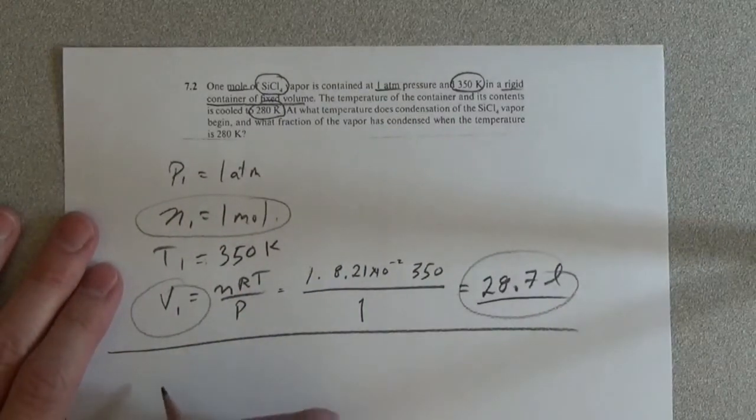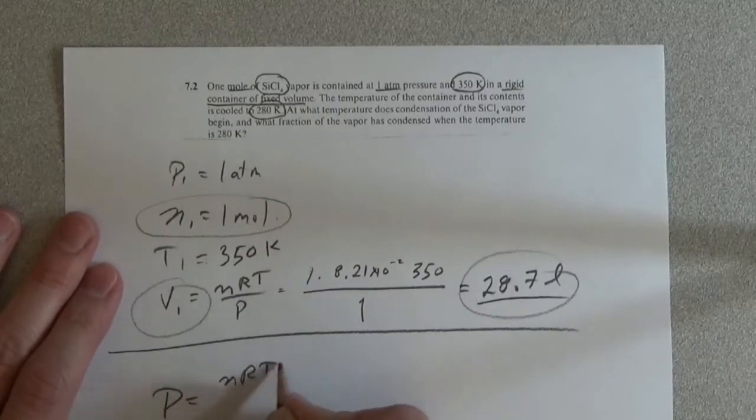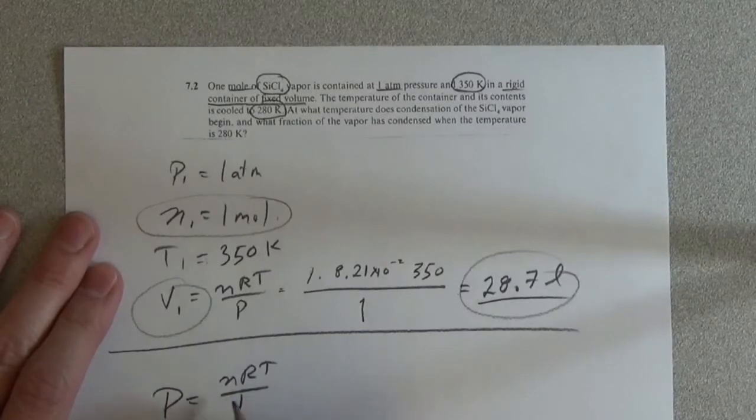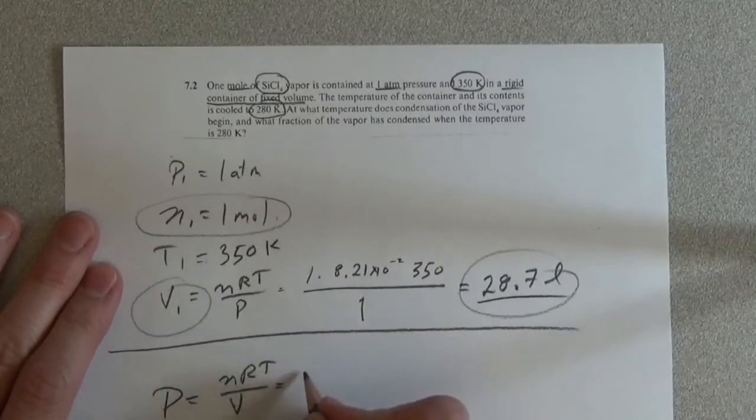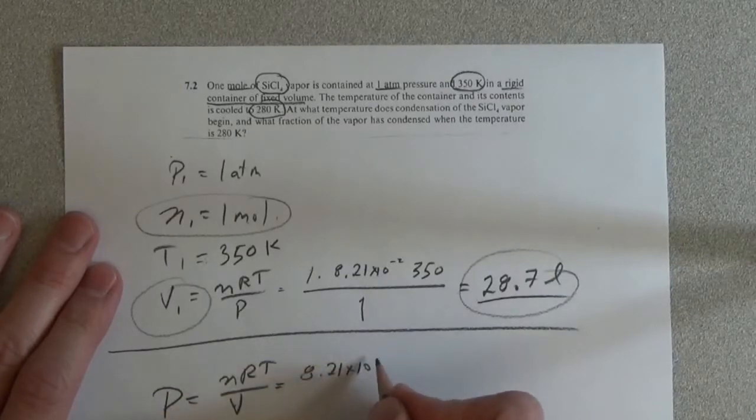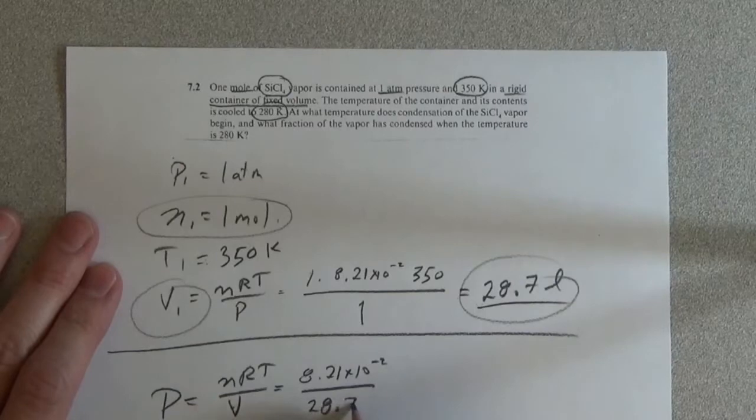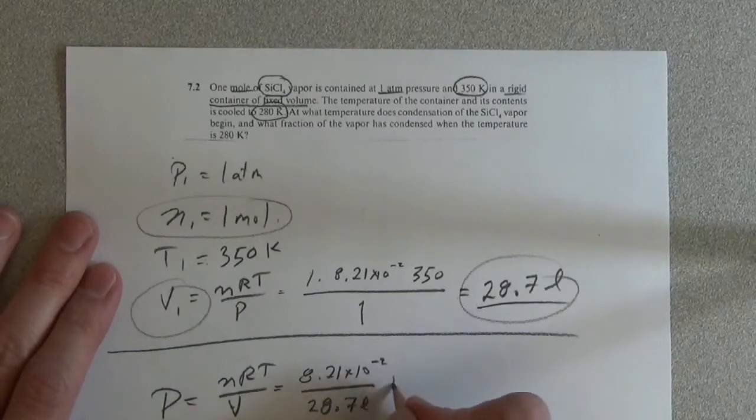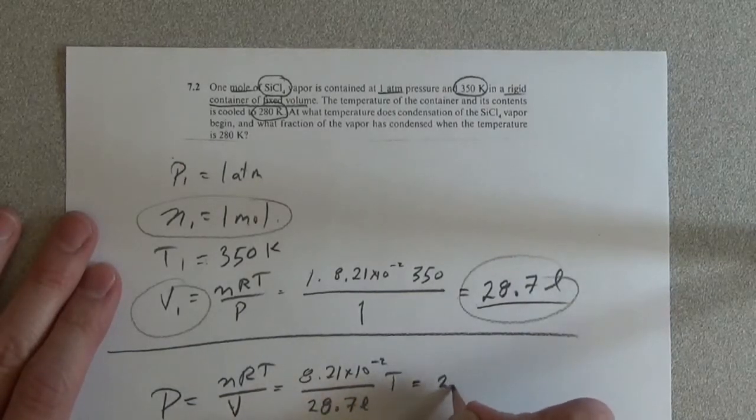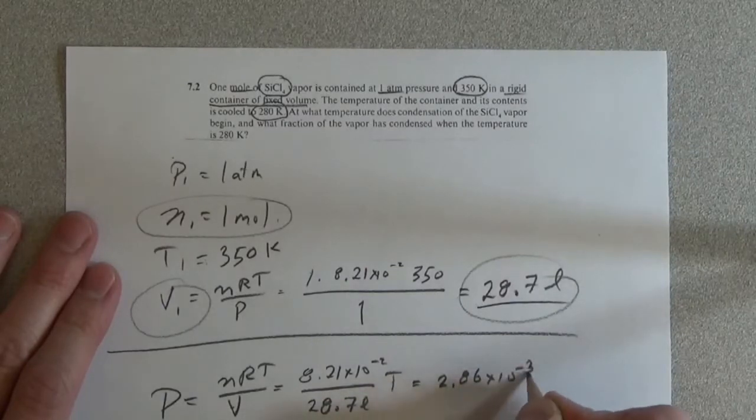So P is equal to NRT over V is equal to 8.21 times 10 to the minus 2 over 28.7 liters times T is equal to 2.86 times 10 to the minus 3 T.